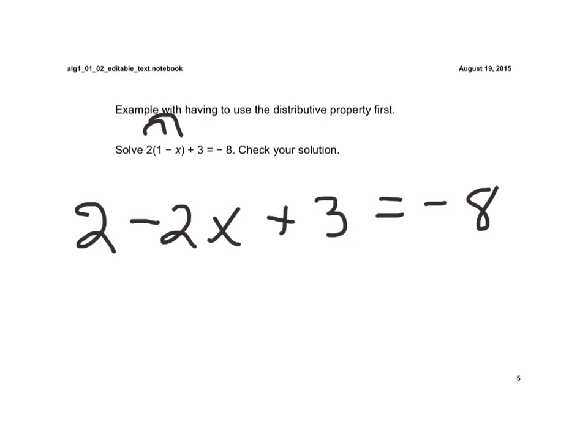Now we have to combine our like terms. Well, this 2 and this 3 are like terms, which gives us 5 minus 2x is equal to a negative 8.